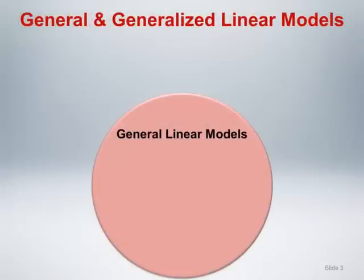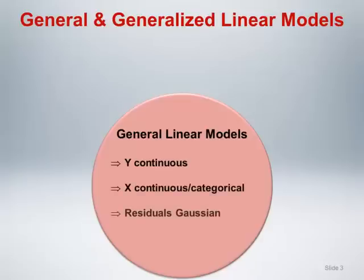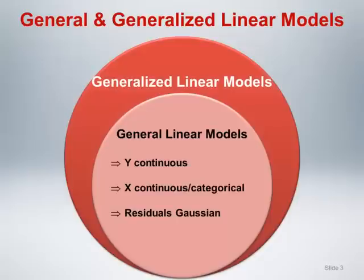Let's talk for a minute about classes of models. Simple and multiple linear regression models are part of the class of models referred to as general linear models. This class of models is characterized by a continuous response, one or more continuous and/or categorical independent variables, and Gaussian errors, or more formally, residuals. Logistic regression does not fit in this class and is actually part of a larger class of models referred to as generalized linear models.